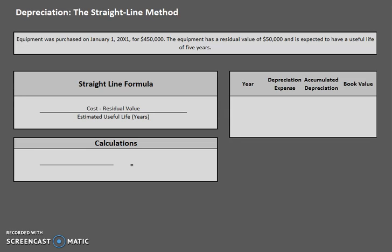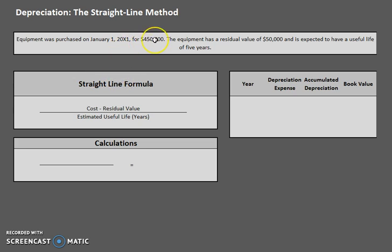Hello and welcome to another TLC Tutoring Company accounting lesson. Today we are going to be taking a look at the straight line method of depreciation. We have a piece of equipment that was purchased at the beginning of the first year for $450,000. This equipment has a residual value of $50,000 and is expected to have a useful life of five years.